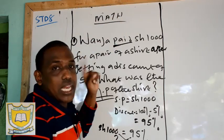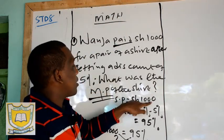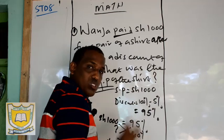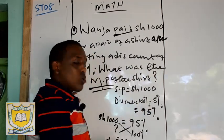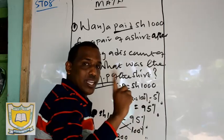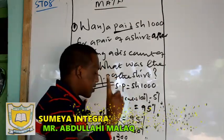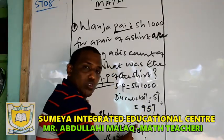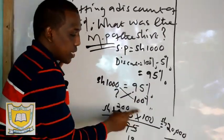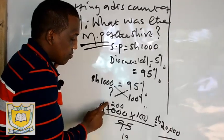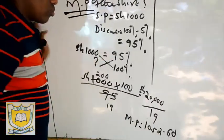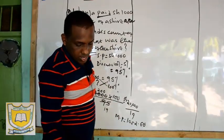The one thousand is the selling price. After a five percent discount, we subtract from 100%: 100 minus 5 equals 95 percent. Market price is always 100 percent. So we cross multiply: 1000 times 100 divided by 95. We get 20,000 divided by 19, which gives us 1,052 shillings and 60 cents. That is the market price.